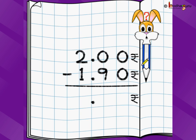Now, let's take another notation of the same thing. Let's say you have 2 rupees. So, we write 2 rupees as 2.00 rupees and we want to take away 1.90 rupees out of it. That is 1 rupee and 90 paise we write as 1.90 rupees.